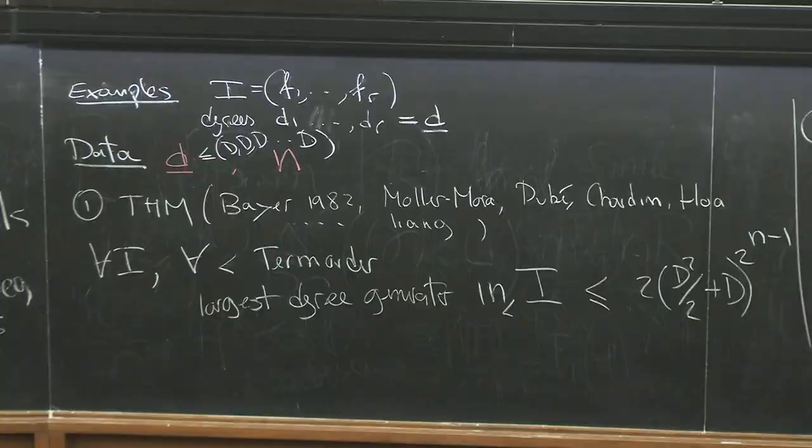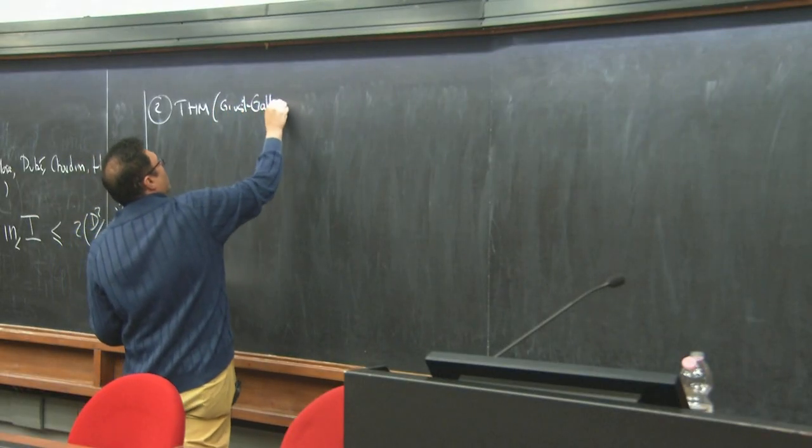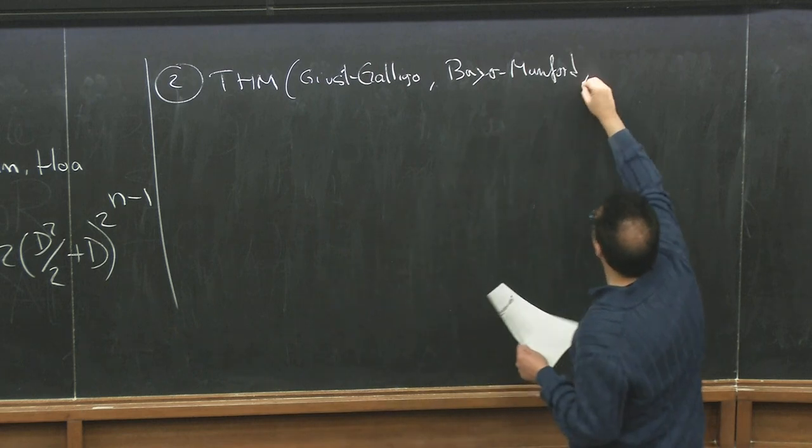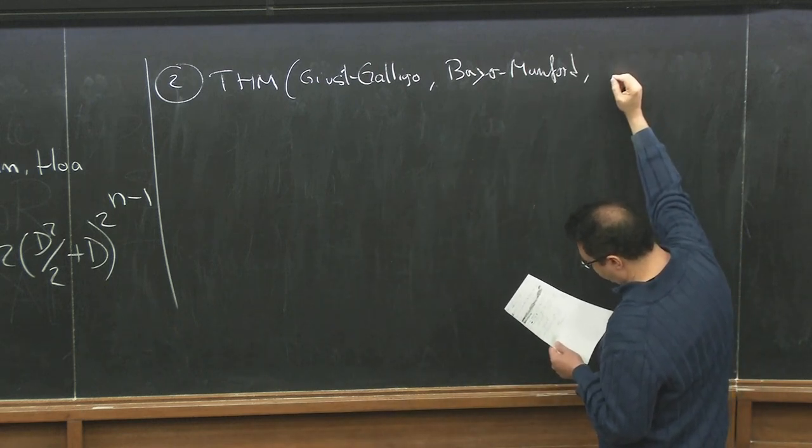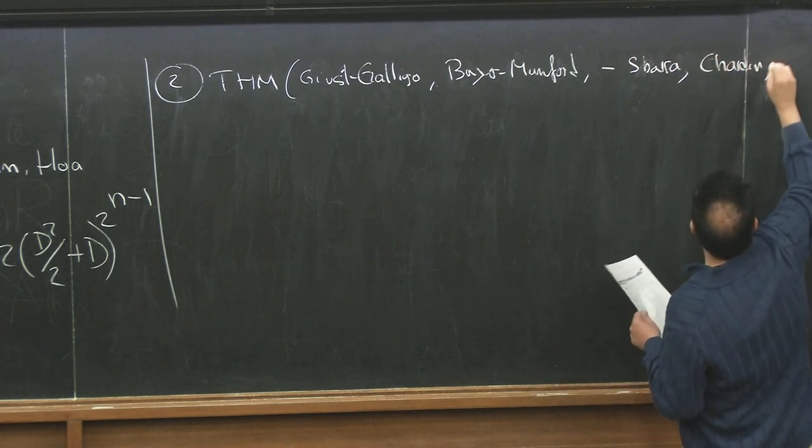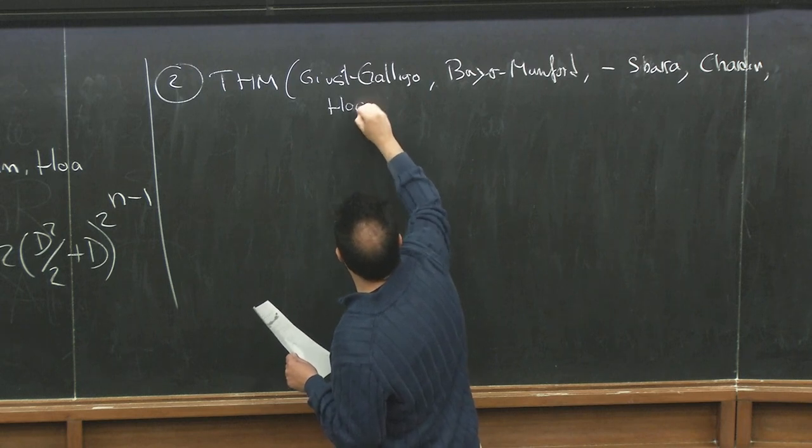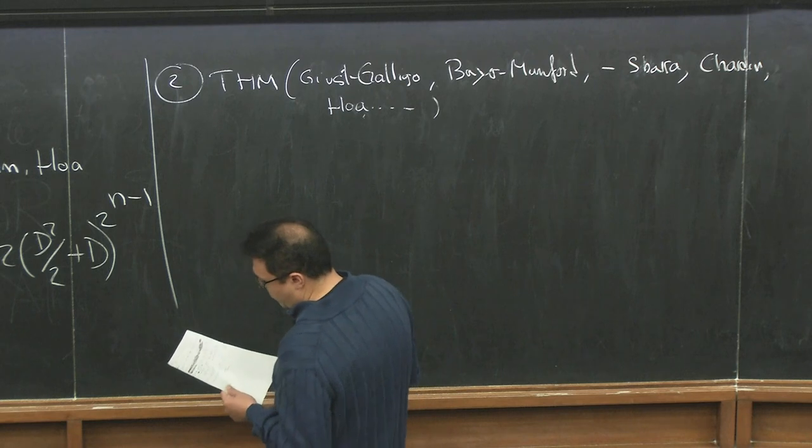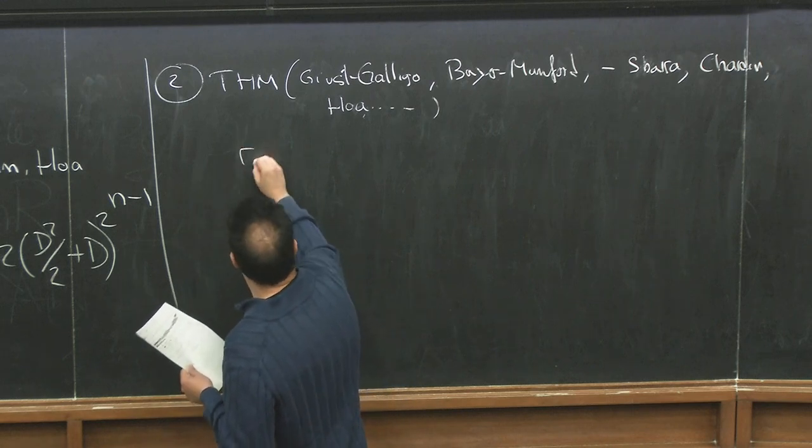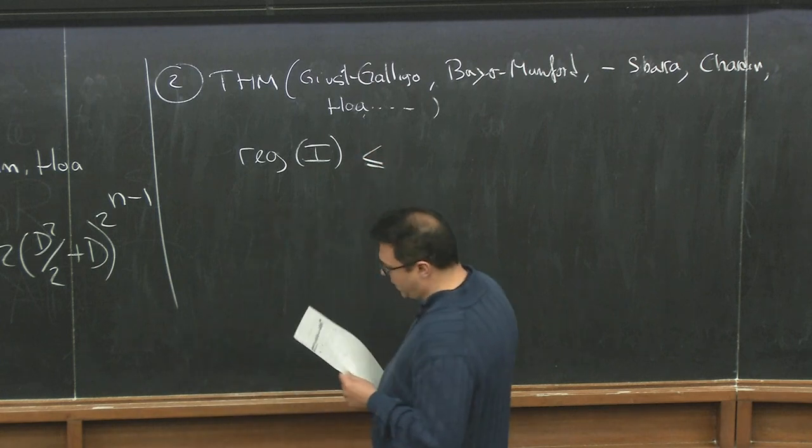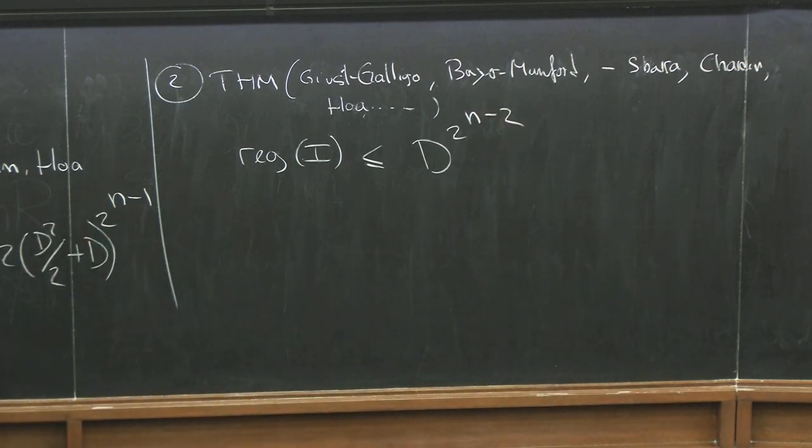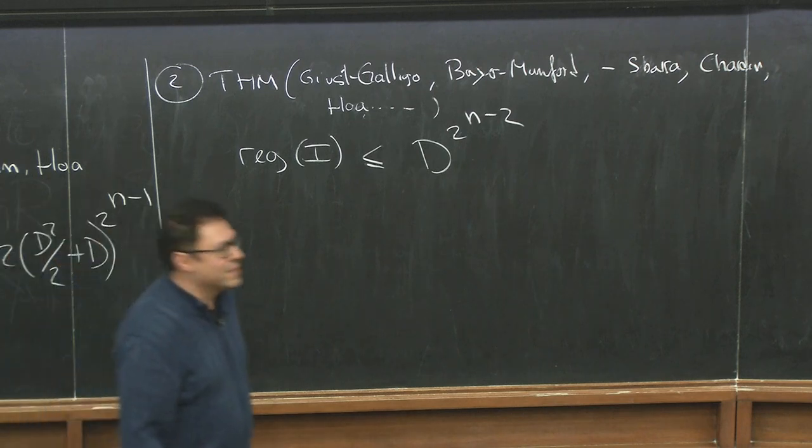So Giusti, Giusti-Gallego, Bayer, Bayer-Mumford, several different versions of similar bounds, improvement on the type of bounds. Myself and Enrico Sbarra, Max Chardin, many other people perhaps even more recently, myself and Erman in a different collaboration. One gets the regularity of the ideal for the fixed data is bounded above by D to the 2 to the N minus 2. To get rid of some trivial cases, let's say N is at least 3. If you're just in two variables, everything is trivial.